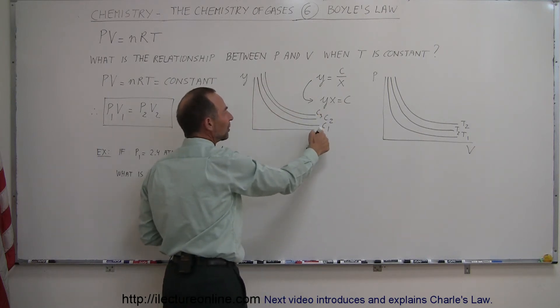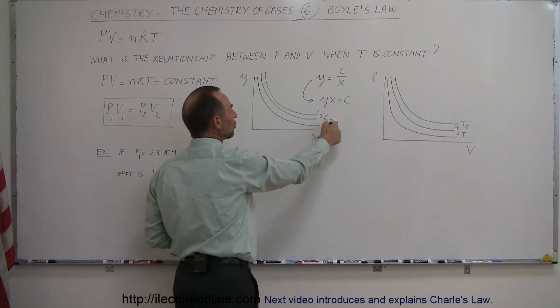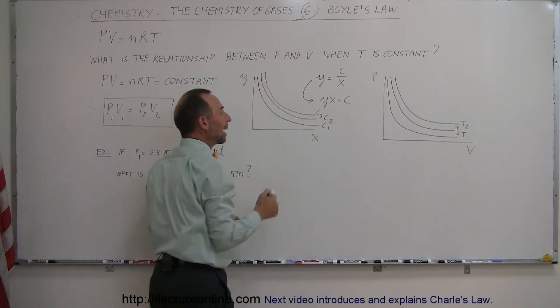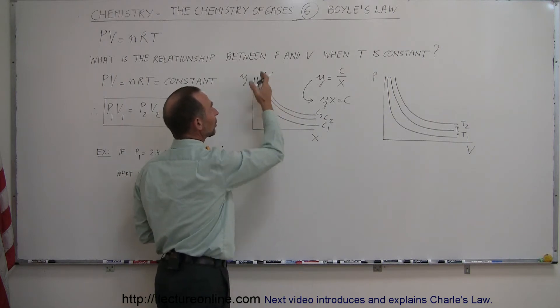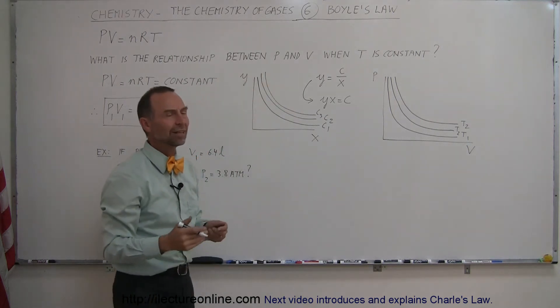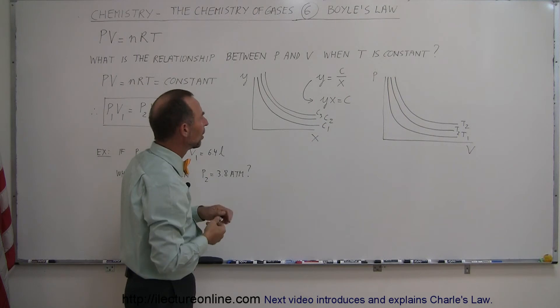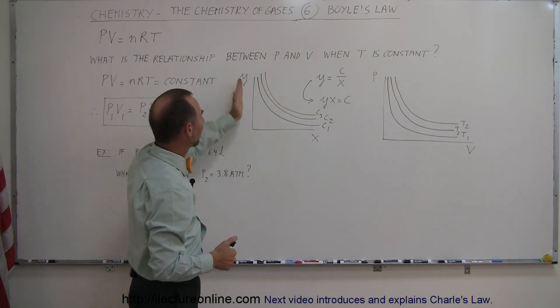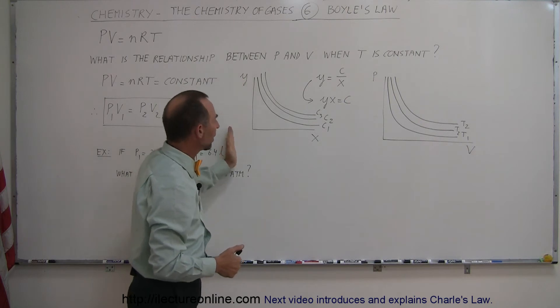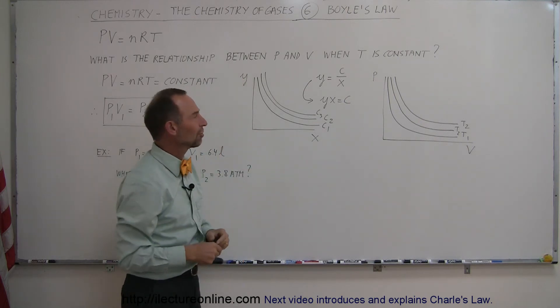And for different constants, constant 1, constant 2, constant 3, the only thing that happens to the graph is that the graph will then change. It will go in a different location, but the general shape is the same. It's an inverse relationship between the pressure and the volume. So if Y goes up, X goes down. If Y goes down, X goes up, just like the pressure and the volume.